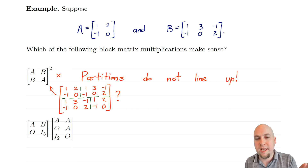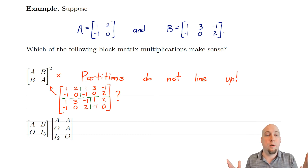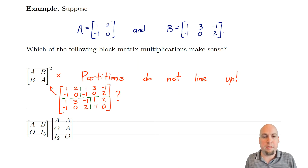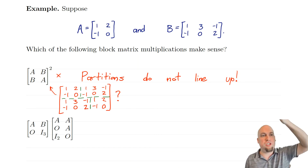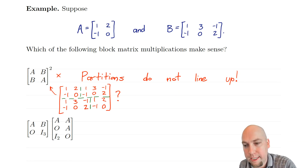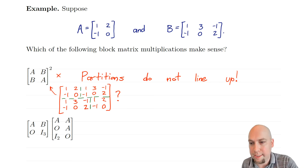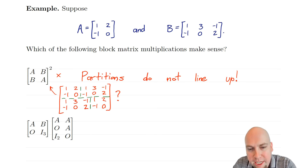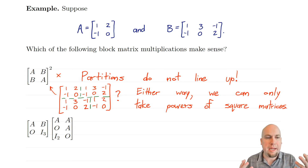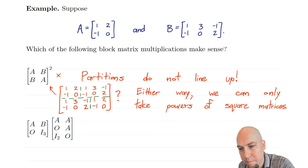We say the partitions must be conformal — the lines you draw to specify block partitioning must be straight lines all the way from top to bottom and left to right. No jagged lines allowed. Also, even setting that aside, this example has another problem: it has four rows and five columns, and you can't take powers of a non-square matrix.